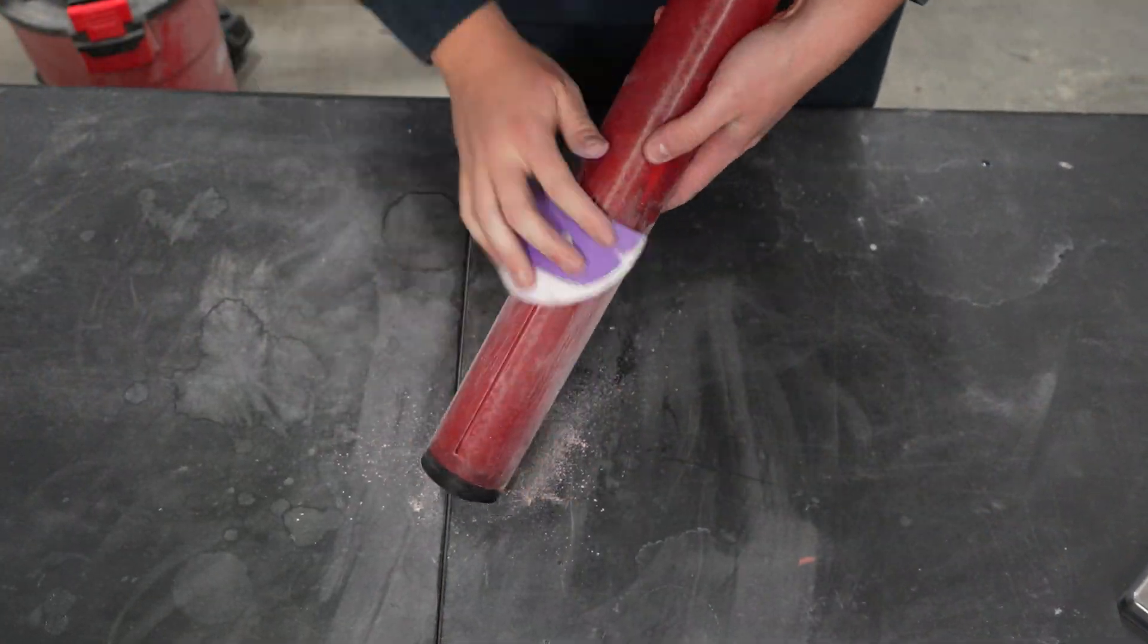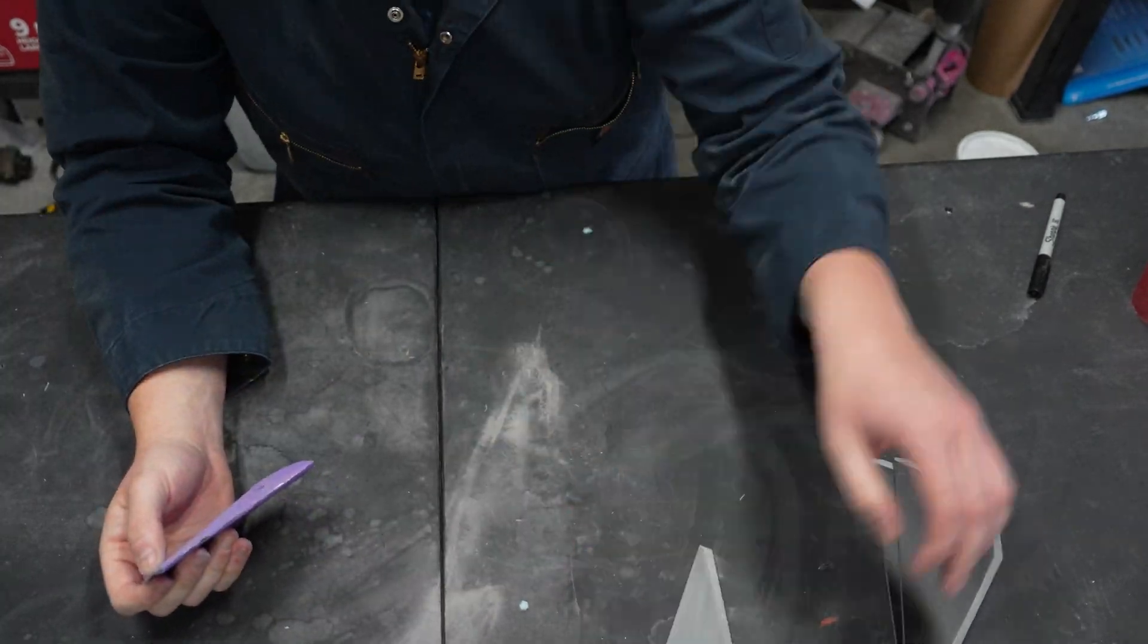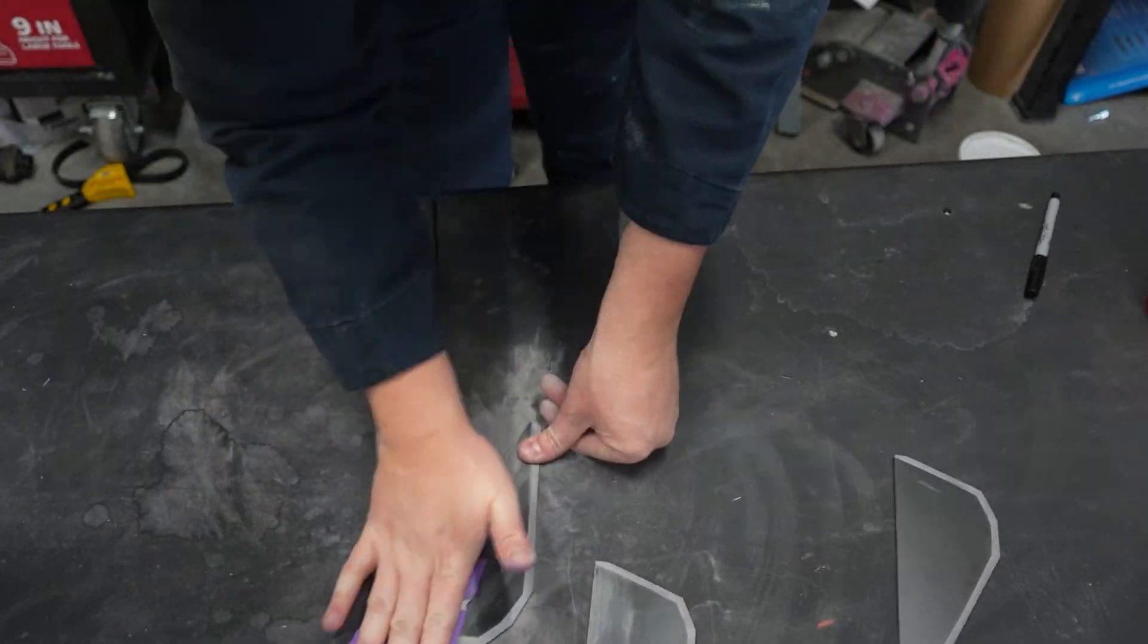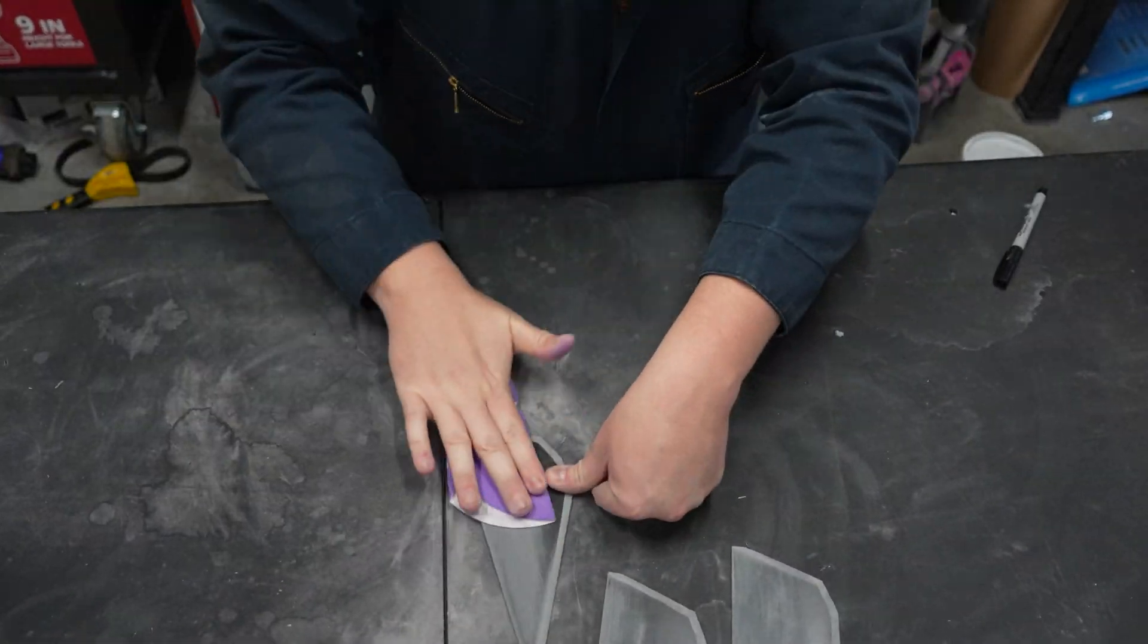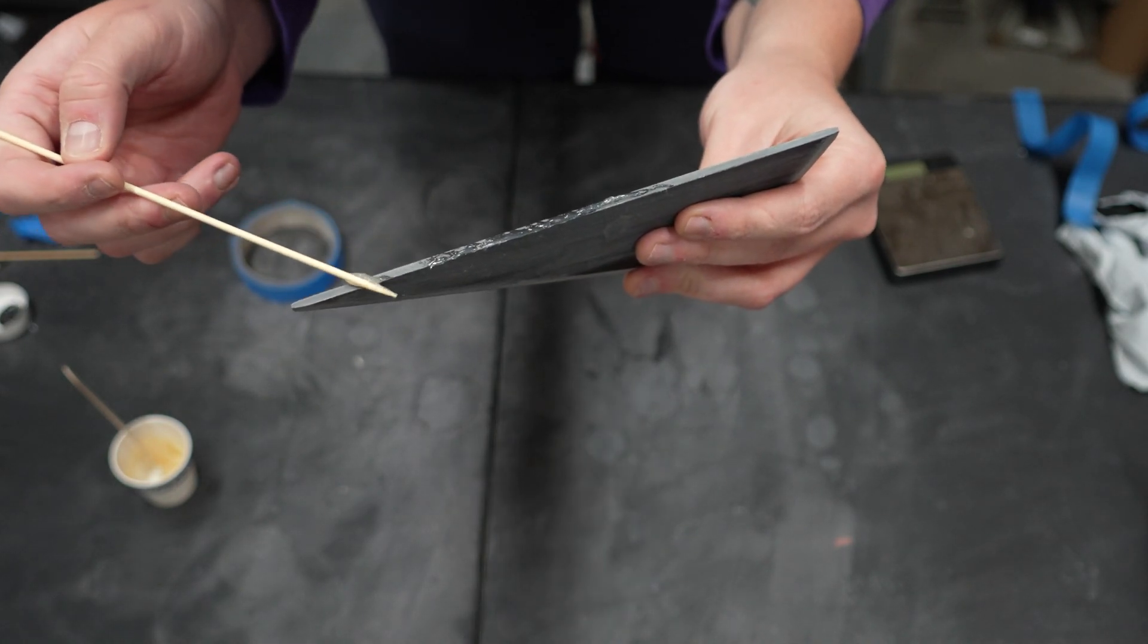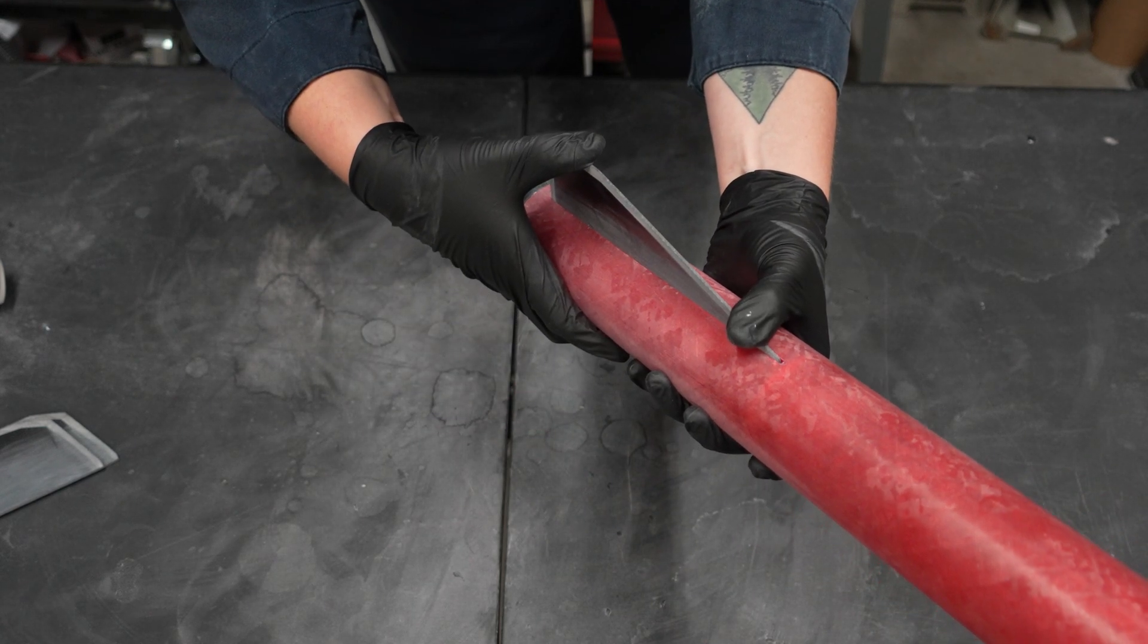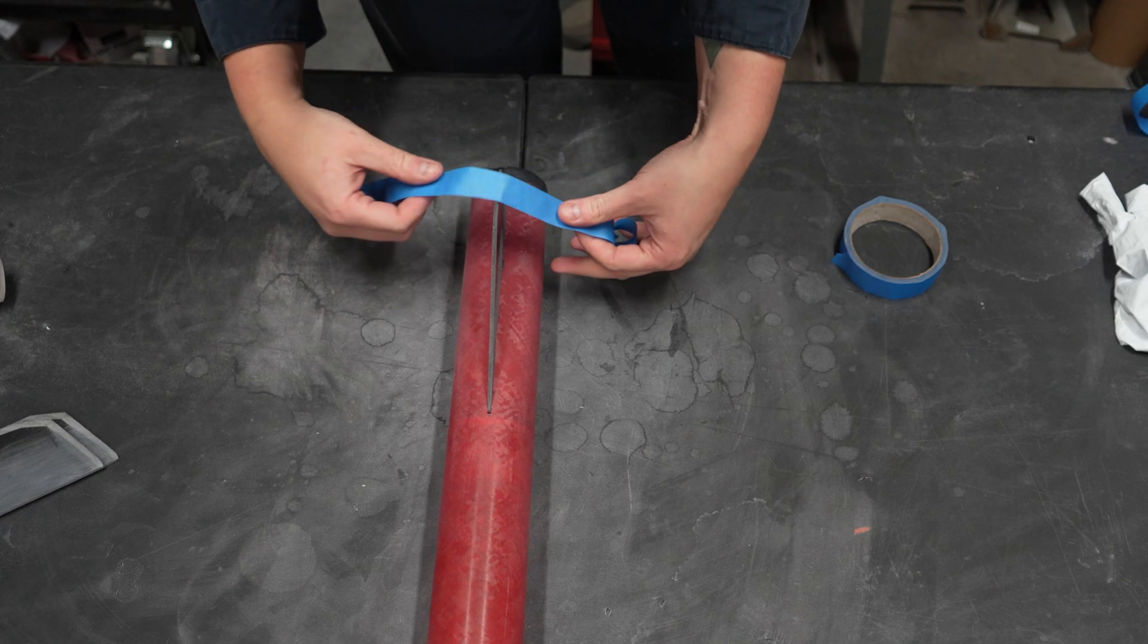Once that epoxy cures, vigorously sand both the airframe and fins where the external fillets will be. This joint is the most important joint to your rocket's survival, so you want to ensure it's thoroughly sanded and clean before applying fillets. It's highly recommended that you wear gloves while working with prepped components once they're clean to prevent contaminating them with any oils from your hands. After sanding and prepping the fins and airframe, apply a bead of epoxy to the root of a fin and slide it through the slot. You can use masking tape to keep the fins straight and vertical while the epoxy cures. Repeat this process for all three fins and allow the epoxy to completely cure before proceeding.